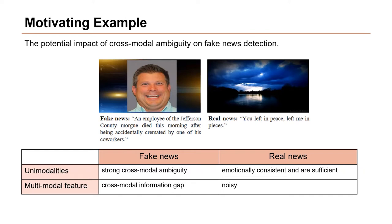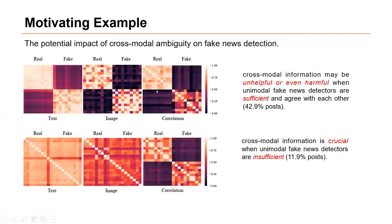However, the cross-modal fusion features are unnecessary or even introduce some noise to the classification results. Statistically, our empirical study using the Weibo dataset shows that cross-modal information may be unhelpful or even harmful when unimodal fake news detectors are sufficient and agreeing with each other. On the other hand, cross-modal information is crucial when unimodal fake news detectors are insufficient. Together, these two cases account for 54.8% of posts in the Weibo dataset. Therefore, multimodal fake news detection methods should be aware of the ambiguity between modalities and adaptively aggregate cross-modal and unimodal features.